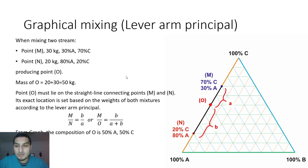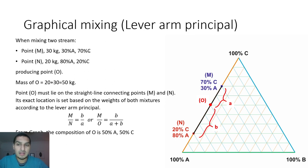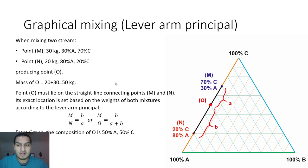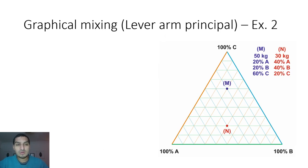You can verify this by direct calculation: M contributes 9 kg of A and 21 kg of C; N contributes 16 kg of A and 4 kg of C. Adding them and dividing by total mass gives the same composition. However, this is more time-consuming than the graphical approach — the graphical method requires only one calculation instead of four or five.